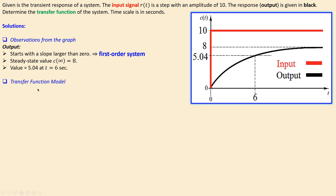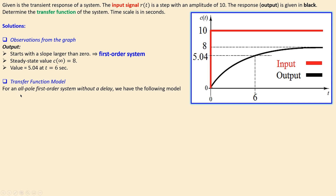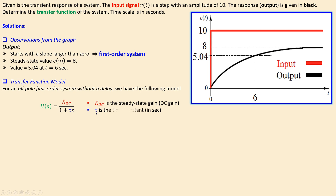The transfer function model in general for this system — since we have assumed a first order system with only poles, no zeros, and no delay — is: H equals K_DC over (1 plus tau·s). K_DC is the DC gain, or steady state gain, of the system. Note that this gain is not 8 — that will become clear shortly. Tau is the time constant, which is a specific characteristic of our system and will be determined using this graph.